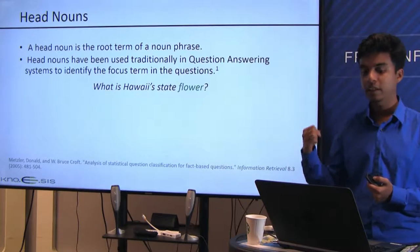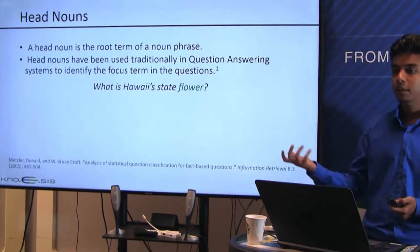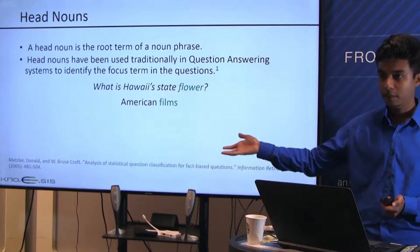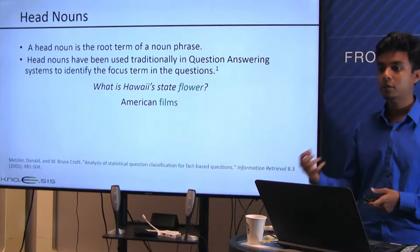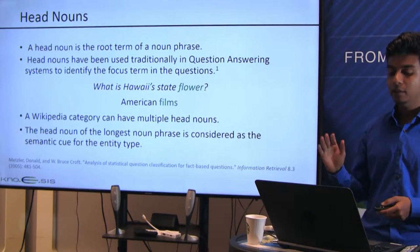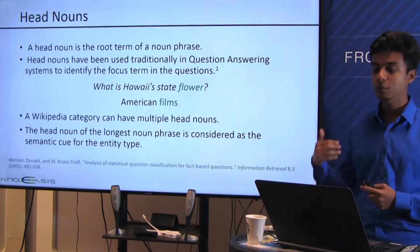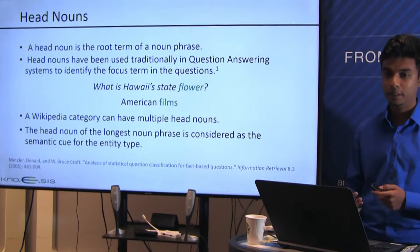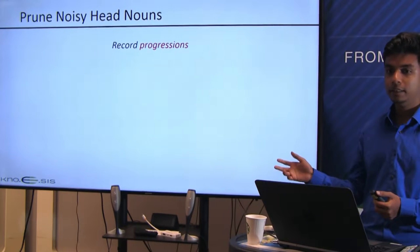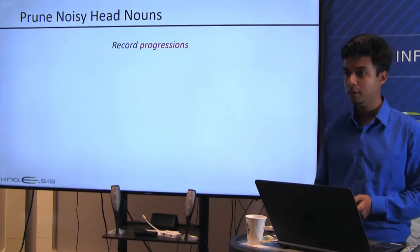A head noun is the root term of a noun phrase, traditionally used in question answering systems to identify focus terms. For example, in 'American films,' the head noun is 'films.' However, a Wikipedia category can have multiple noun phrases, so we take the longest noun phrase and use its head noun. But some head nouns like 'progressions' from a Furious 7 category are not semantically relevant. So we need a mechanism to filter relevant head nouns.